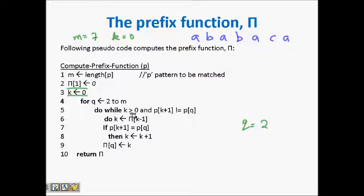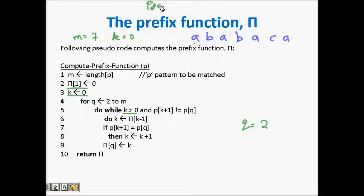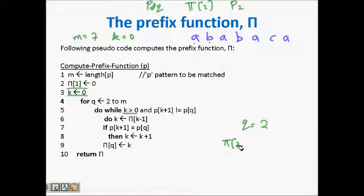What we do here is reduce the number of comparisons and save what we have already computed. k is zero here, and we check if p[k+1] equals p[q]. We are now trying to find π[2], so q is two here, meaning we look at p[2] which is 'b'. Since p[k+1] is not equal to p[q], we set π[2] equal to k, which is zero. So π[2] is zero.